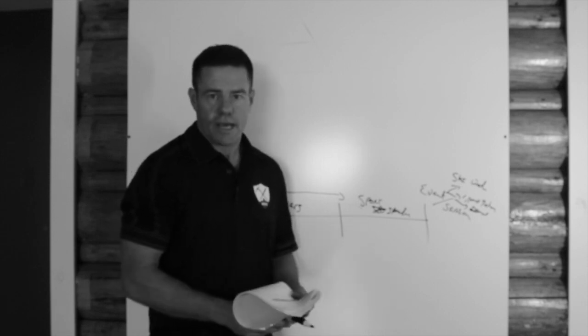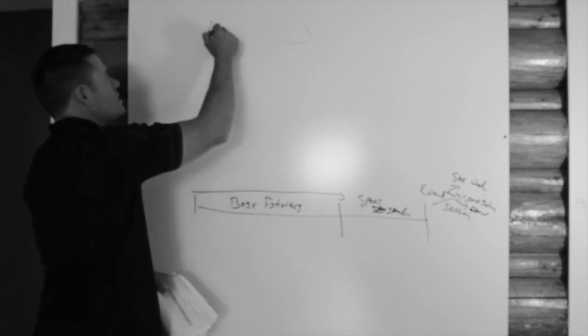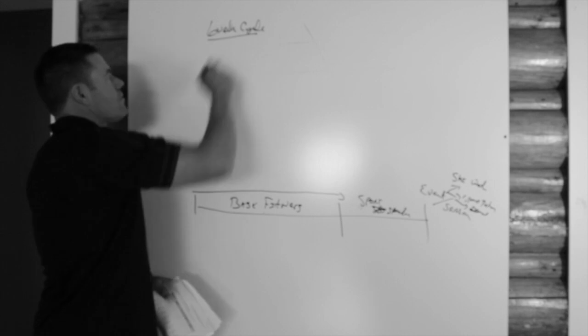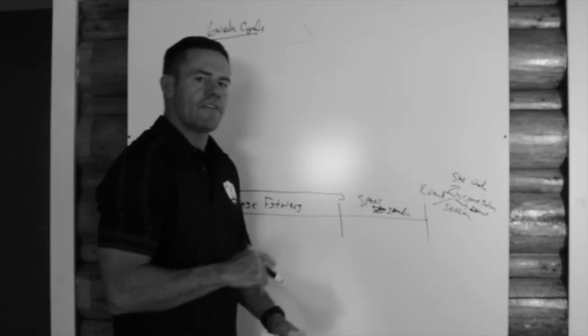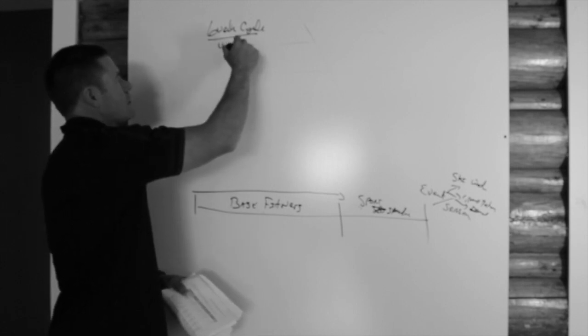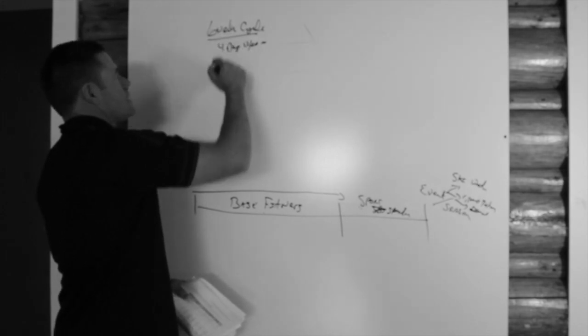So during an endurance cycle, for example, there's an emphasis on endurance. A six-week cycle for mountain athletes, I generally like to train either four or five days a week, let's just assume four days a week.